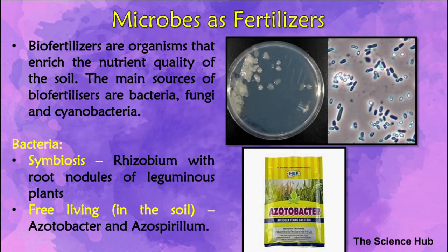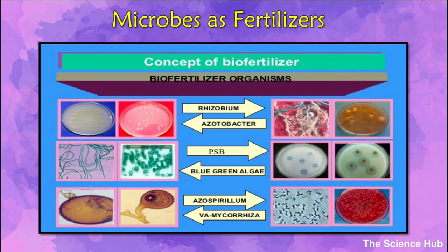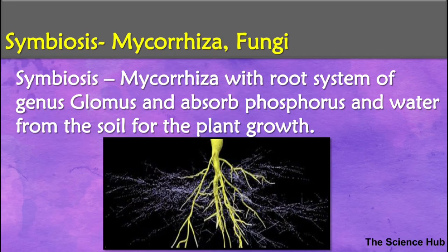Microbes as bio-fertilizers — bio-fertilizers are organisms that enrich the nutrient quality of the soil. The main sources include bacteria, fungi, and cyanobacteria. Root nodules formed by Rhizobium bacteria on roots of leguminous plants increase the nitrogen level of soil, which is necessary for various metabolic processes. Azotobacter and Azospirillum are free-living bacteria that live in soil and fix atmospheric nitrogen into organic forms. Symbiotic association of fungi with angiosperm plants, that is mycorrhiza, also increases the fertility of soil. Glomus forms mycorrhiza that absorbs phosphorus from the soil and passes it to the plant.